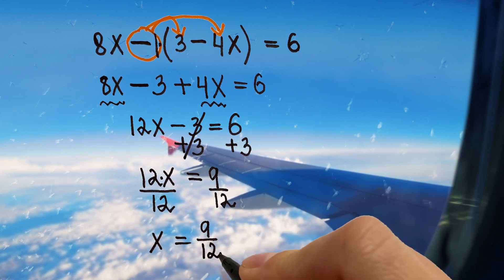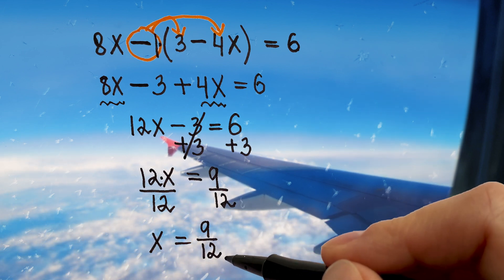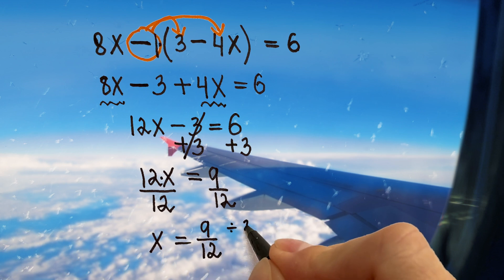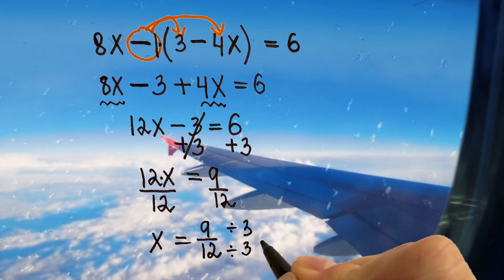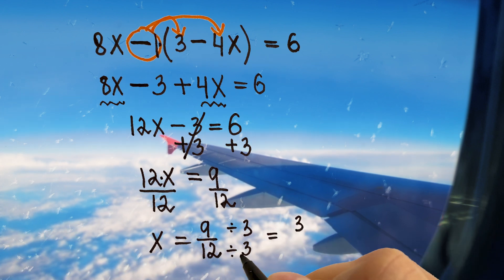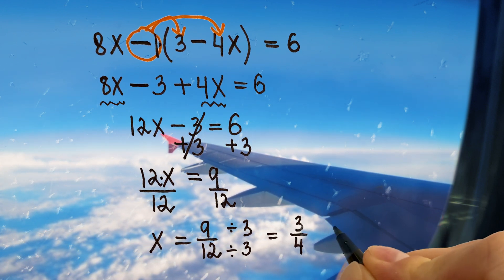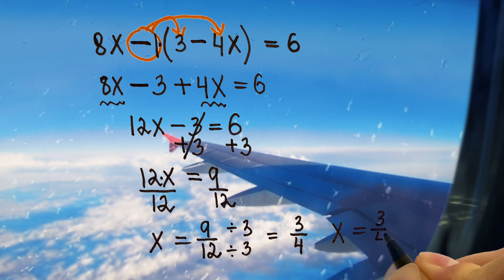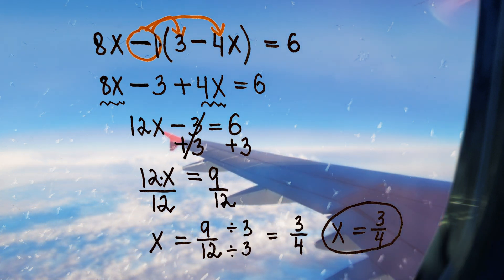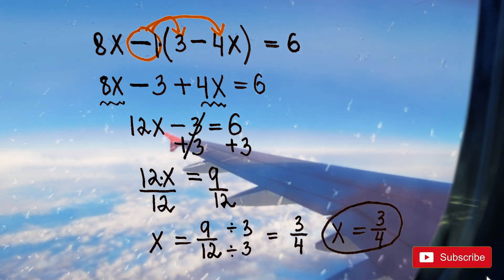We need to reduce this fraction because 9 and 12 can be divided by 3. So we are dividing numerator by 3 and denominator by 3. 9 divided by 3 is 3, 12 divided by 3 is 4. So our x equals 3/4 and that's our answer. You did it, nice job today. Keep up your good work and I will see you next time.